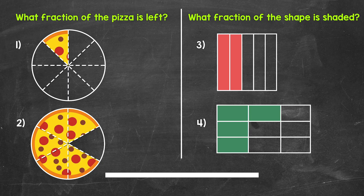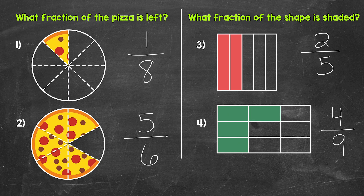Okay, so that's two minutes. Let's take a look at the answers. For number one, there's one-eighth of the pizza left. For number two, there's five-sixths of the pizza left. For number three, two-fifths of the shape is shaded. And lastly, for number four, four-ninths of the shape is shaded.